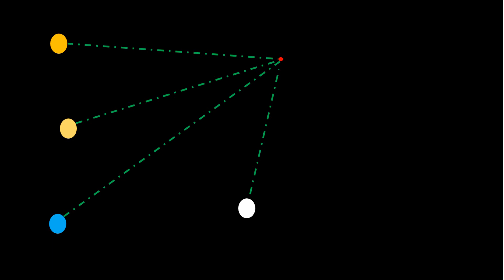Every charge has its own electric field. If I assume I have a big positive Q here, a negative Q here, and maybe another positive Q — each one of these charges will have its own electric field. For positive charges the electric field will always be going outward, whereas for negative charges the electric field will be going into that charge.